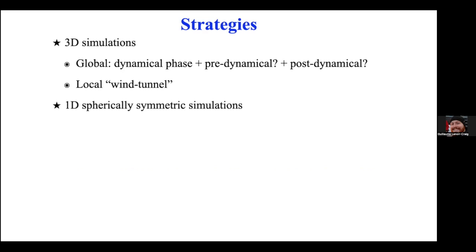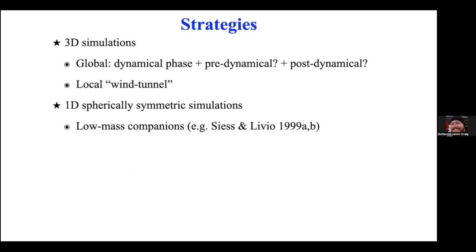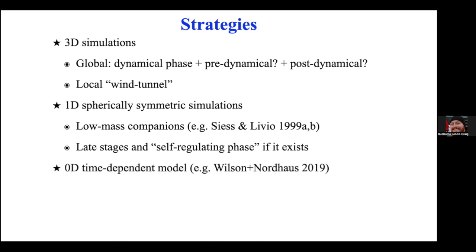You can also use 1D spherically symmetric simulations. These can be useful, particularly for low-mass companions, because they don't disturb the envelope as much and the spherical symmetry is roughly preserved. They're useful for studying planetary or brown dwarf companions, but less so for similar-mass binary systems. They may also be useful for the very late stages when the two cores are deep inside the envelope.